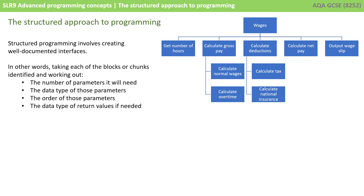You can see here that we've taken a program called 'wages' and broken it down into a number of individual tasks, such as get the number of hours, calculate the gross pay, and calculate the deductions. Some of these operations we've decided to break down further. For example, calculate gross pay is actually two separate operations: calculating the normal wages and calculating any overtime.